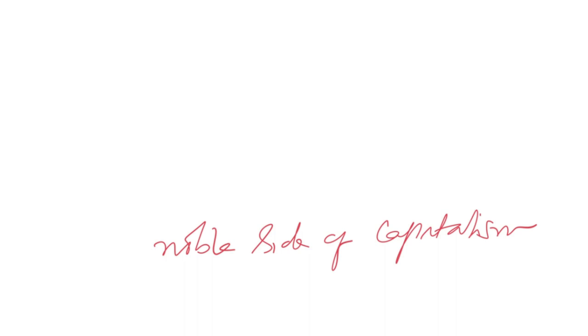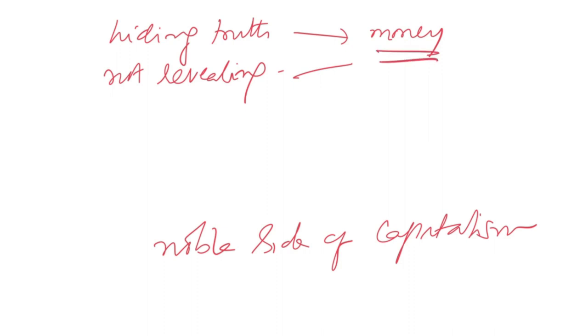Because what many people are doing, they by hiding truth, they make money. By not revealing truth, some media houses they make money. But this firm tells the truth and out of the truth it is making money. This is a noble activity.